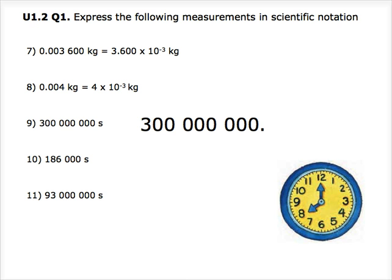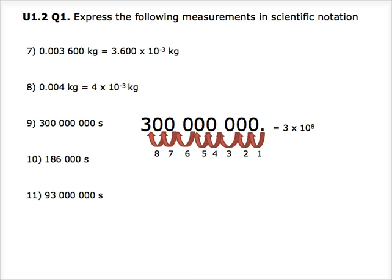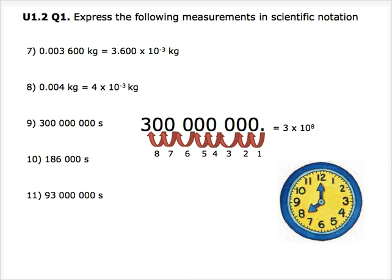Question 9: we have 300 million seconds. Since this value is really large, we have to move the decimal point towards the left. After moving it 8 times, we will have 3 times 10 to the power of 8.